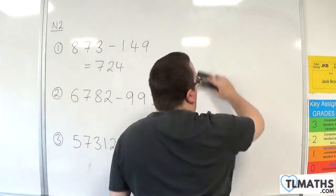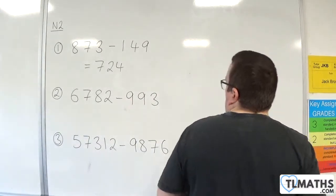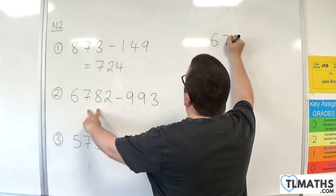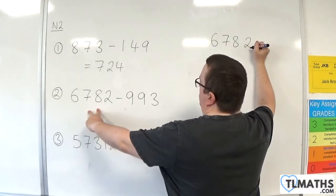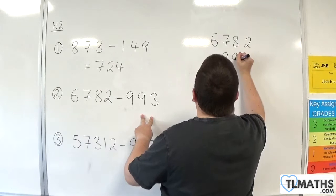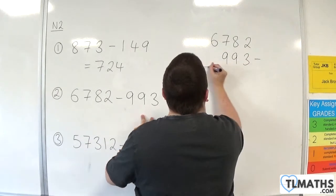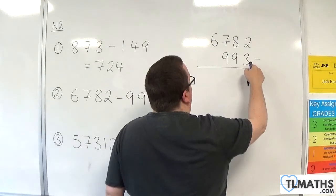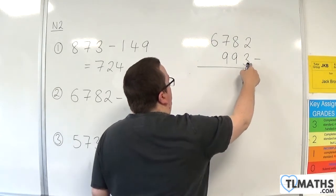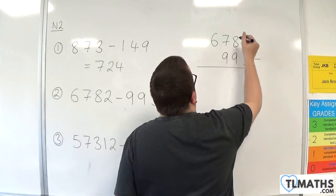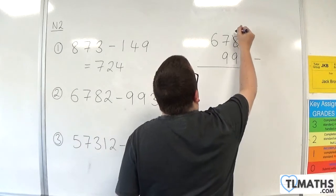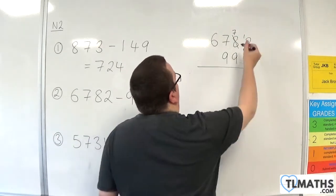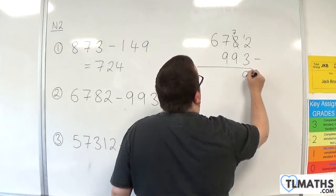Let's take a look at another example. So we have 6,782 take away 993. 2 take away 3 — we can't do that without going into negatives, so I need to borrow 1 from the 8. So the 8 becomes 7, and I've borrowed 1, so 2 becomes 12. 12 take away 3 is 9.